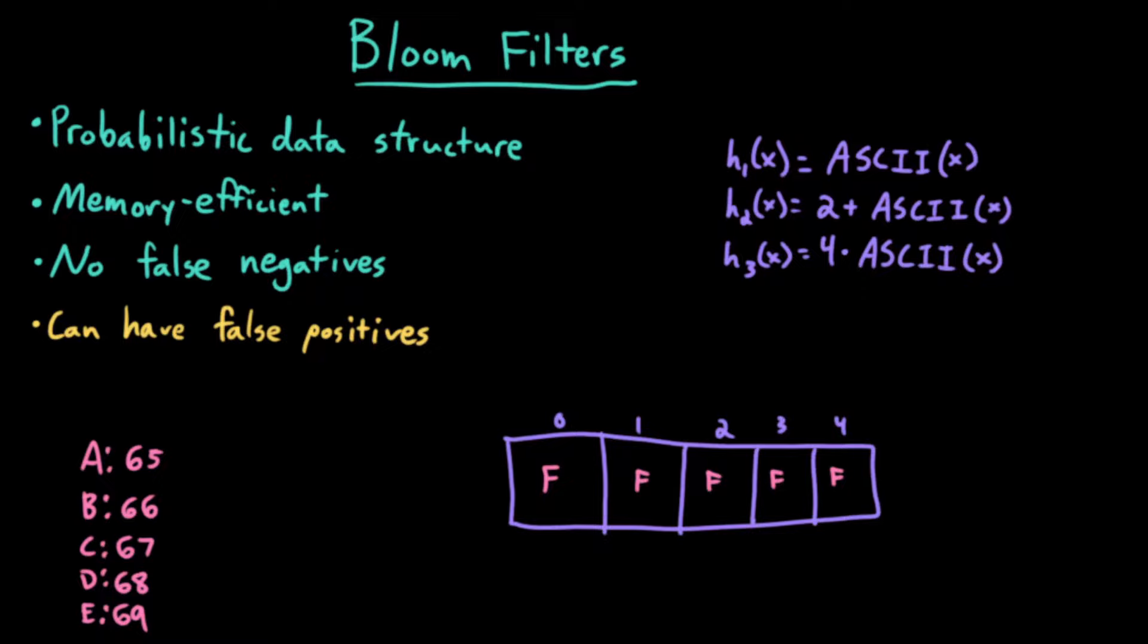And sometimes this might be prohibitively large for whatever context we might be facing. So the bloom filter is a similar data structure in concept, but it's actually a probabilistic data structure, which is memory efficient, so it takes far less memory than a hash table. It's probabilistic in that we're not necessarily 100% sure of what's in the data structure.